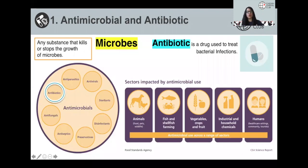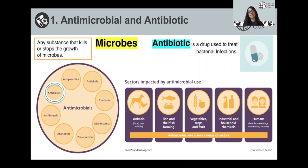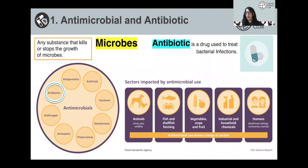Microbes are microscopic organisms. They include bacteria, viruses, fungi, and parasites. Antimicrobials, therefore, are any substances that kill or stop the growth of these microbes. They're used in a wide range of settings and are thought to have varying impacts on antimicrobial resistance. As you can see, antibiotics are one type of antimicrobials. Examples of antibiotics include penicillin, colistin, tetracycline, fluoroquinolones, and more.